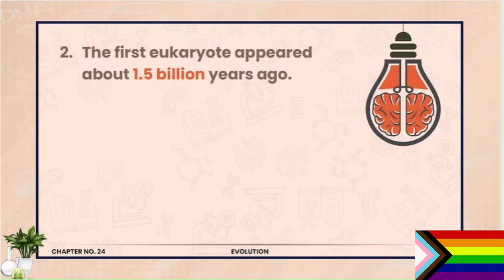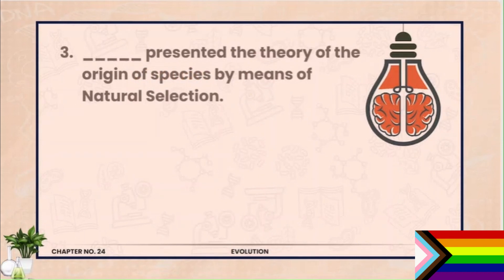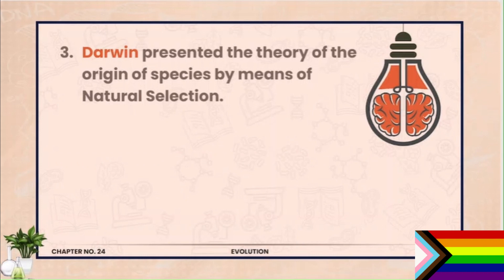Question 3. Darwin presented the theory of origin of species by means of natural selection. He is Darwin. Origin of new species by means of natural selection present ki.